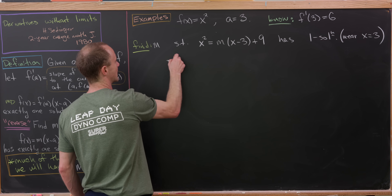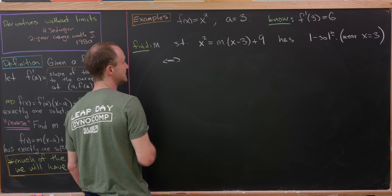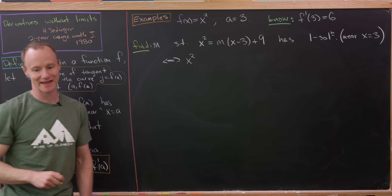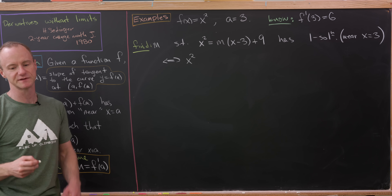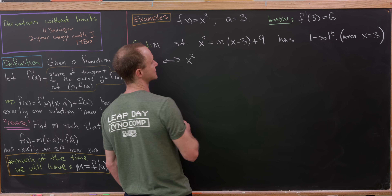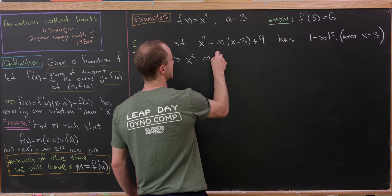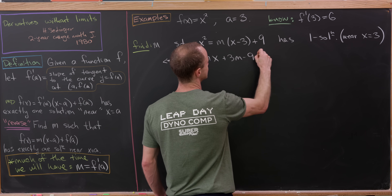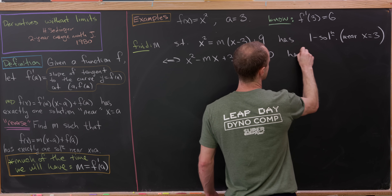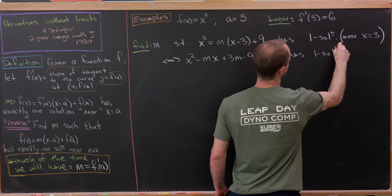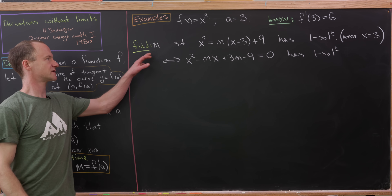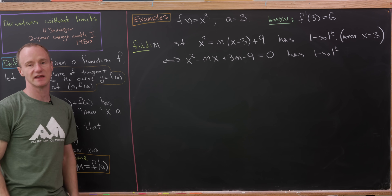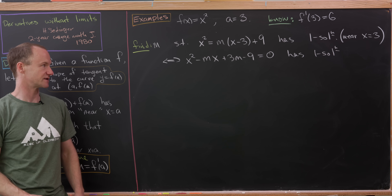Let's rearrange this equation, which is quadratic in x. Moving things around, we get x squared minus m times x plus 3m minus 9 equals 0 has one solution. The m chosen so that the original equation has one solution is equivalent to the m chosen so that this new equation has one solution.